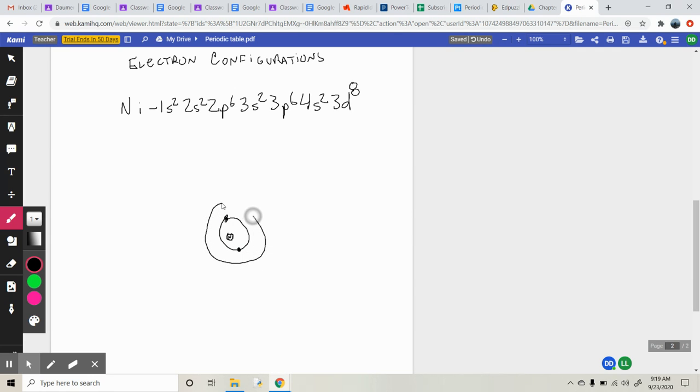2s2, second energy level. S, so it's a circle, and there's two electrons in that guy as well.